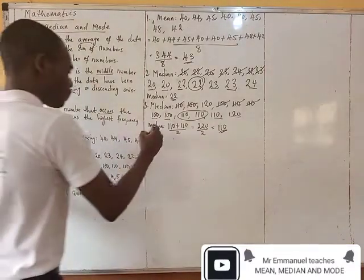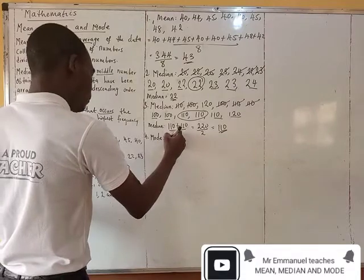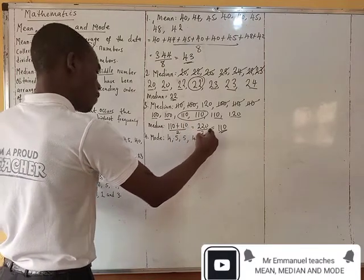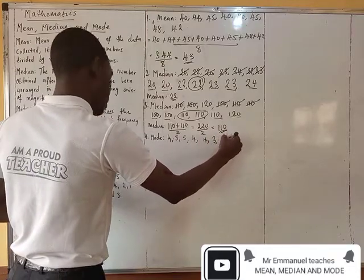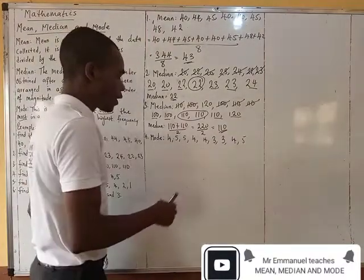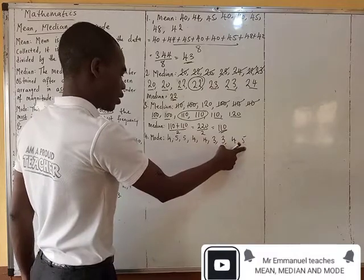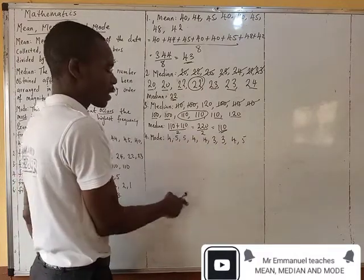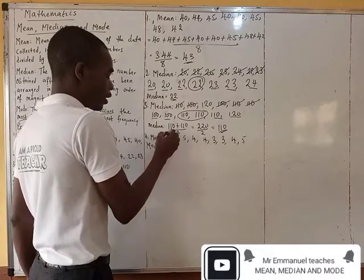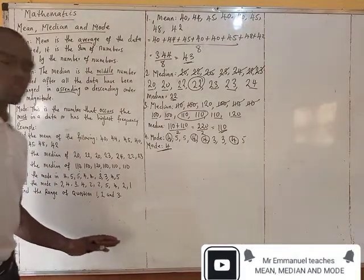Number four: find the mode. We know that mode is the number that appears the most. Mode of four, five, five, four, four, three, three, four, and five. Looking at these numbers, five appears three times, four appears four times, and three appears two times. So your mode is four, because it appears the most — one, two, three, four times. The number that appears the most is always called the mode.